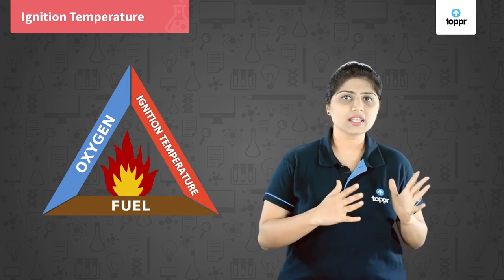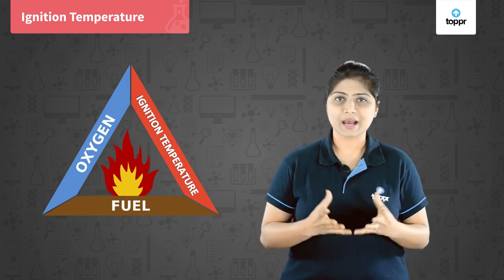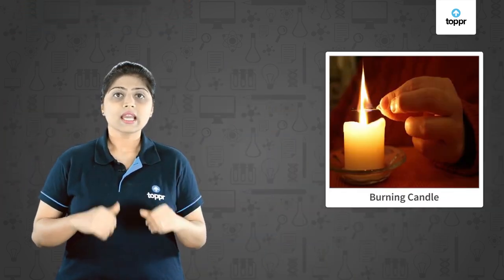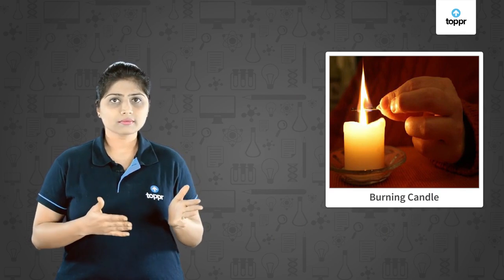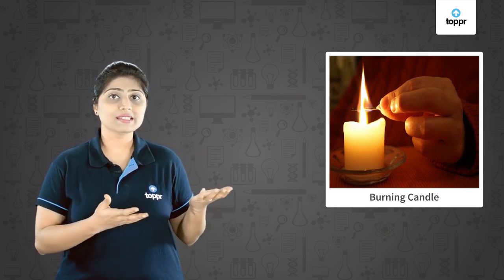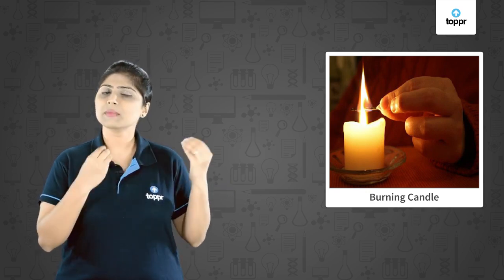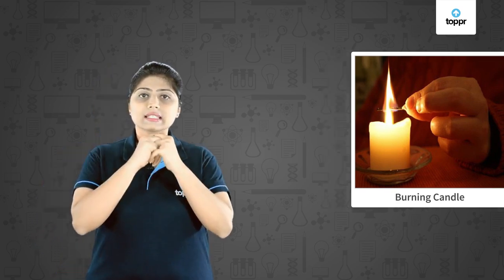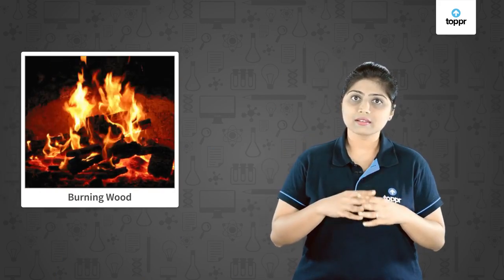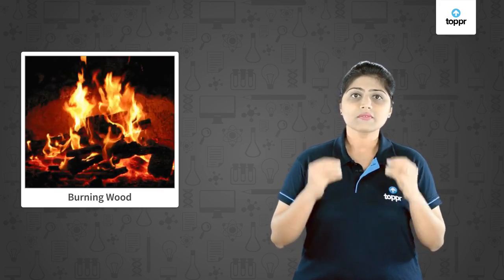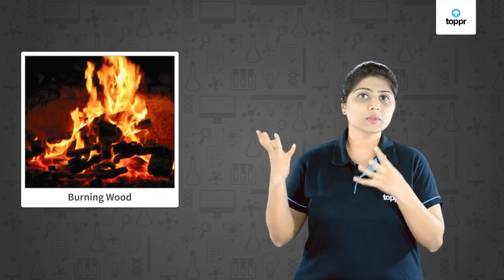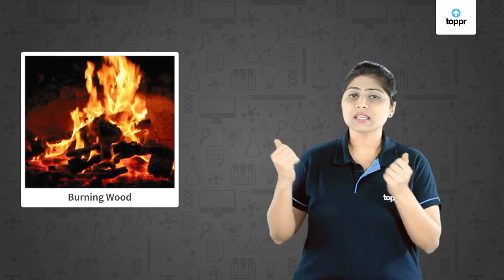Let us understand ignition temperature with the help of some examples. Take an example of a candle — does a candle burn on its own? No, you have to light it with a matchstick, which means you have to give it some heat. Take the example of wood — can we burn wood with a matchstick? No, we have to burn it with some more flame, either with paper or using kerosene oil.